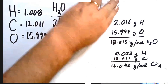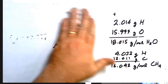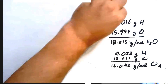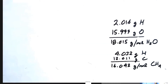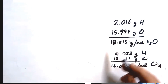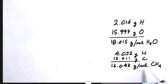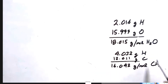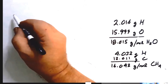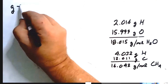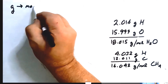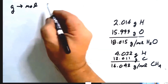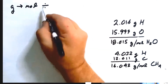Now, leaving the molar masses on screen, let's look at the types of problems we see in the lab: grams to moles and moles to grams. Since these are actually ratios — actual divisions — they can be converted into conversion factors. I'm going to do one problem with water and one with methane. The first one is grams to moles, and grams to moles typically implies division.